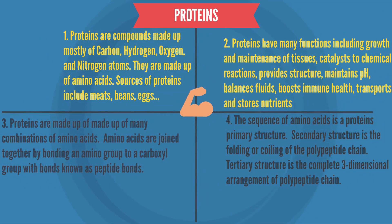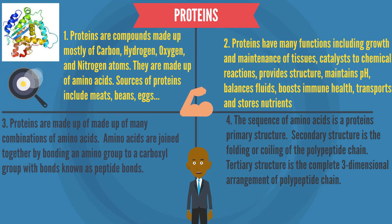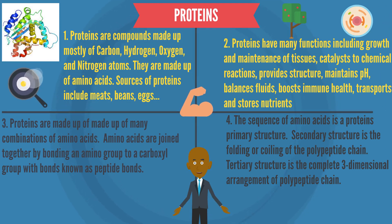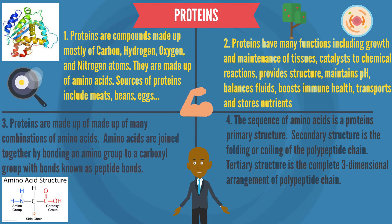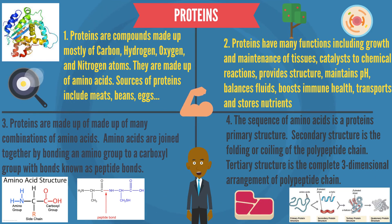Our third macromolecule is proteins, which are compounds made mostly of carbon, hydrogen, oxygen, and nitrogen atoms. They are made up of amino acids, and some sources of proteins include meats, beans, and eggs. Proteins have many functions including growth and maintenance of tissues, catalysts to chemical reactions like enzymes, providing structure, maintaining pH, balancing fluids, boosting immune health, and transporting and storing nutrients. Proteins are made up of many combinations of amino acids joined together by bonding an amino group to a carboxyl group via peptide bonds. The sequence of amino acids is a protein's primary structure. Secondary structure is the folding or coiling of the polypeptide chain, and tertiary structure is the complete three-dimensional arrangement of the polypeptide chain.